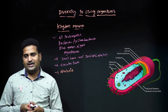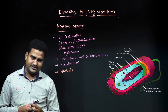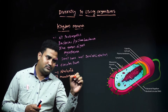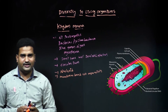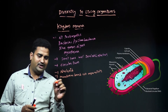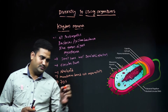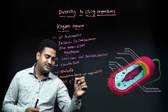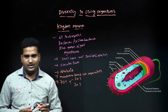Membrane-bound cell organelles are absent in prokaryotic organisms. They only contain 70S ribosomes. The subunits of the 70S ribosome are the 50S larger subunit and the 30S smaller subunit.